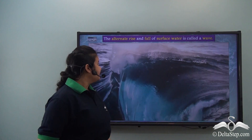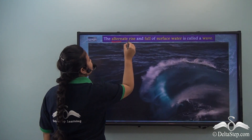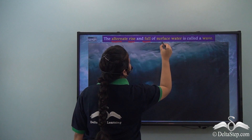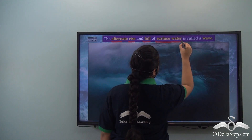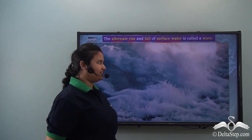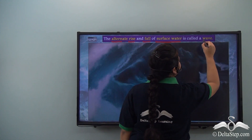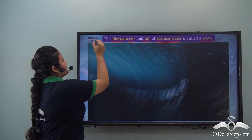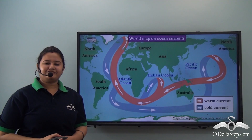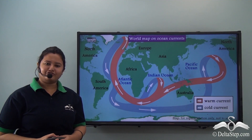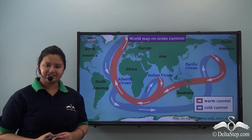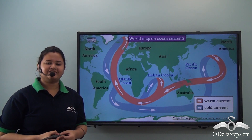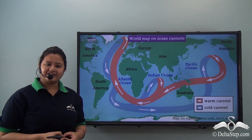What is a wave? The alternate rise and fall of surface water under the influence of wind is called a wave. If the movement of water on the surface of the earth follows a specific pattern or direction, then it is called ocean currents.